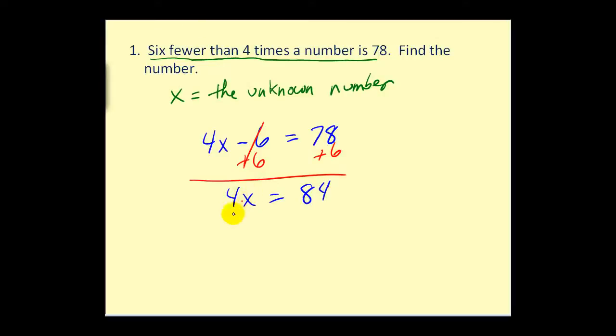This is attached by multiplication, so we'll divide both sides by four. And we have x equals 21. And to check this, four times 21 would be 84 minus six equals 78. And that checks.